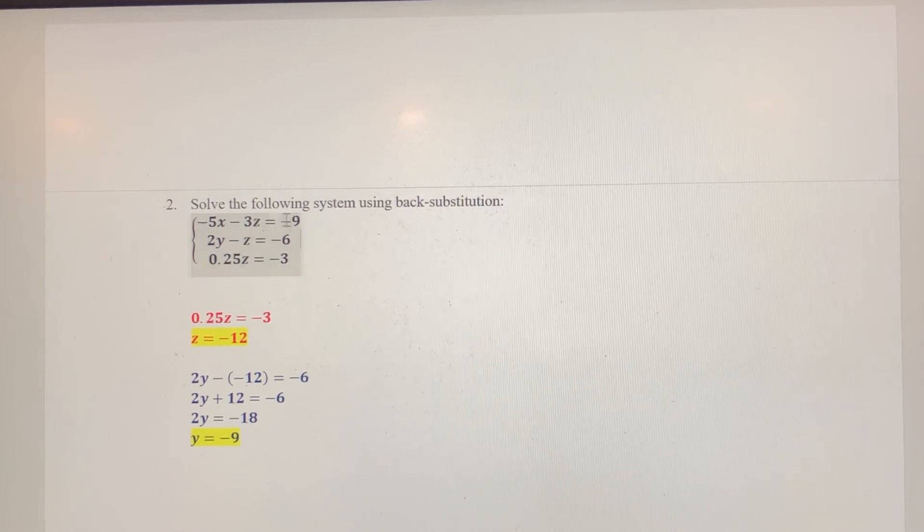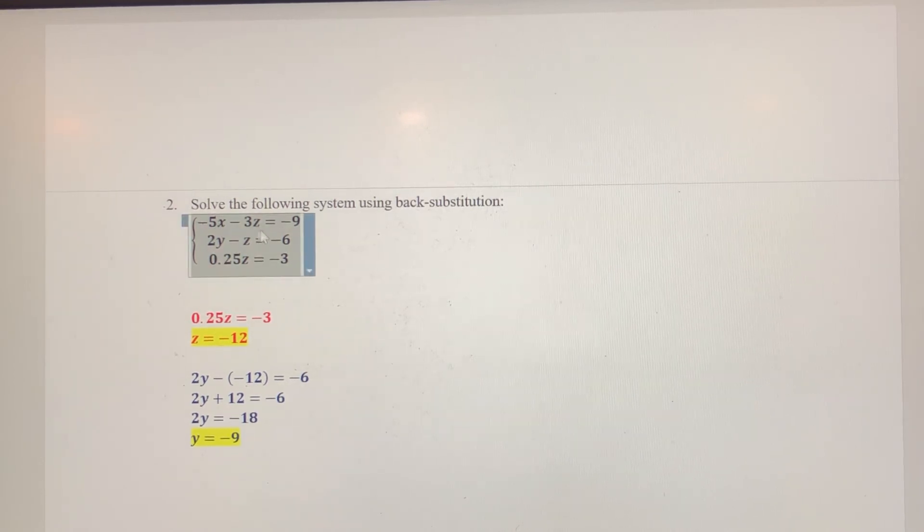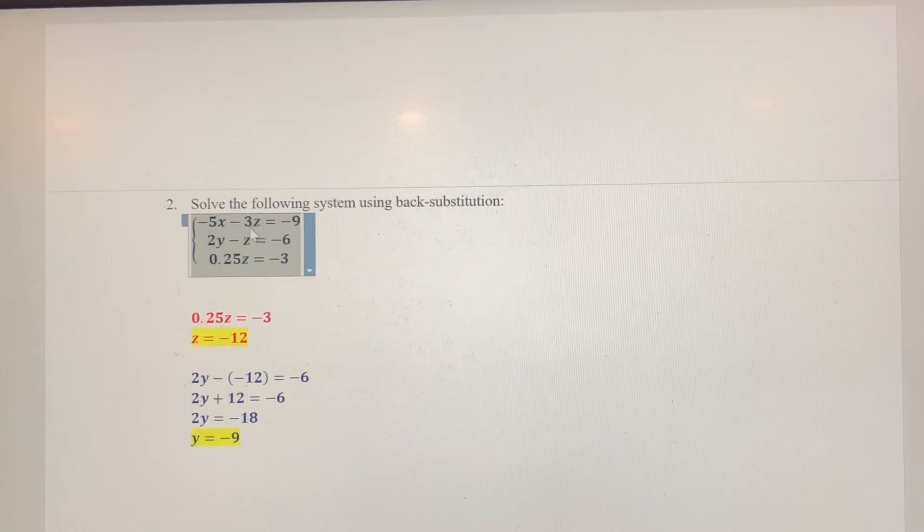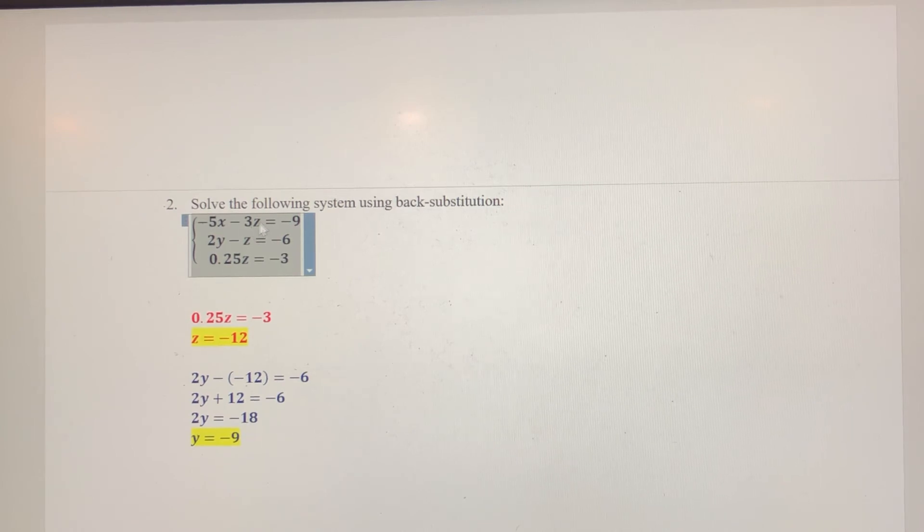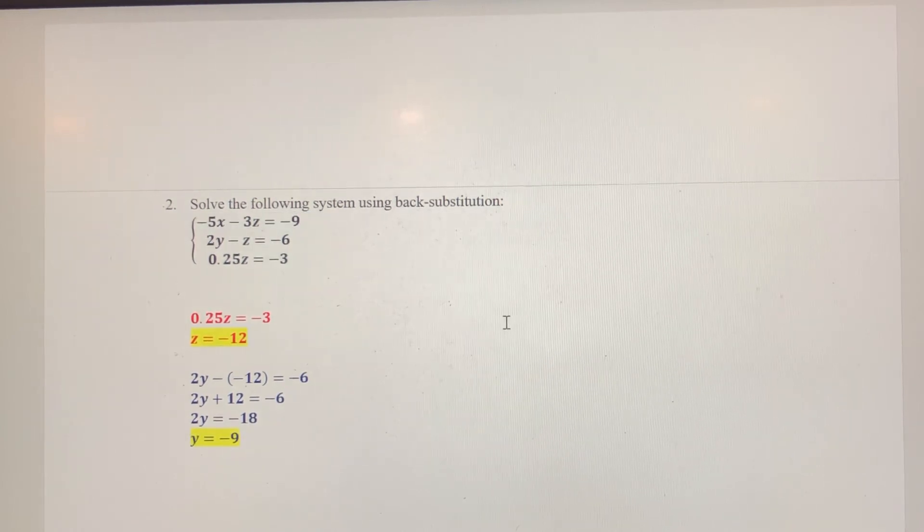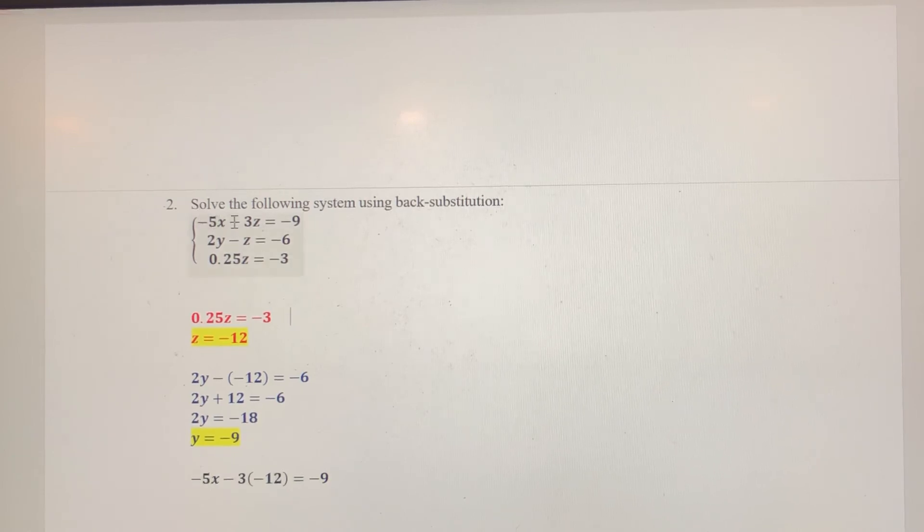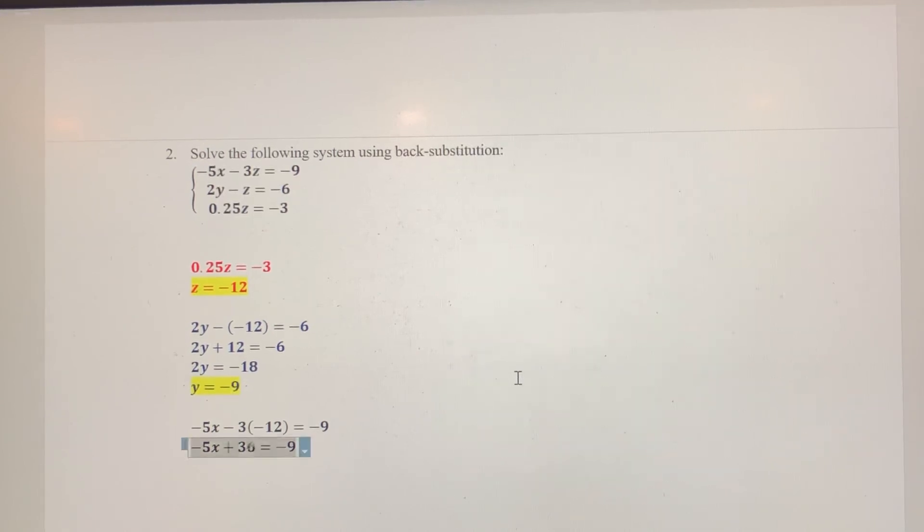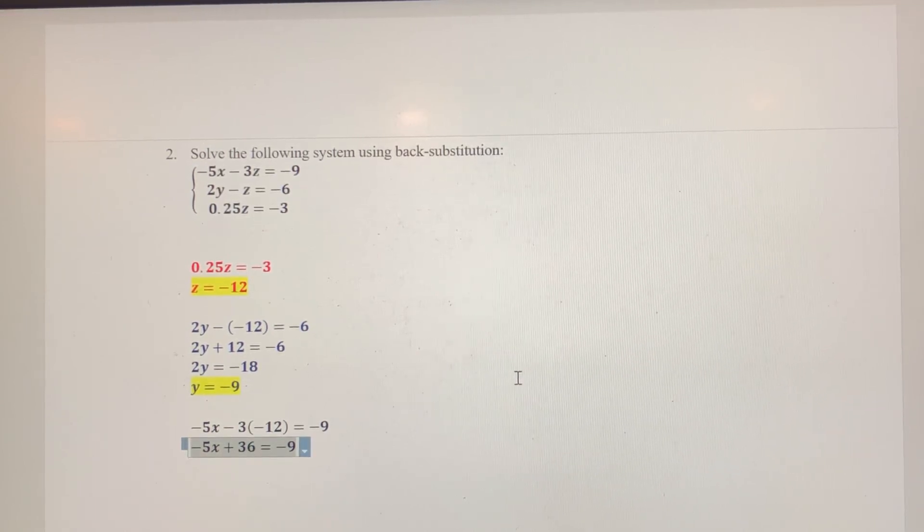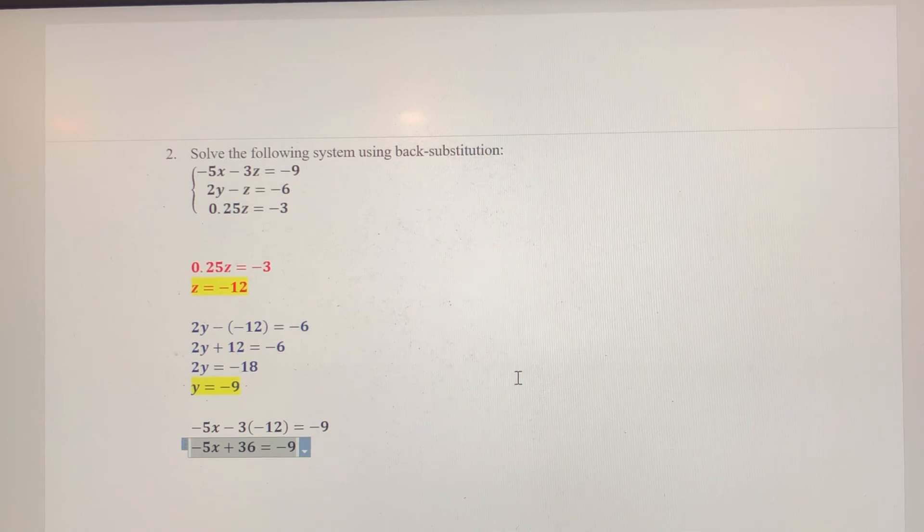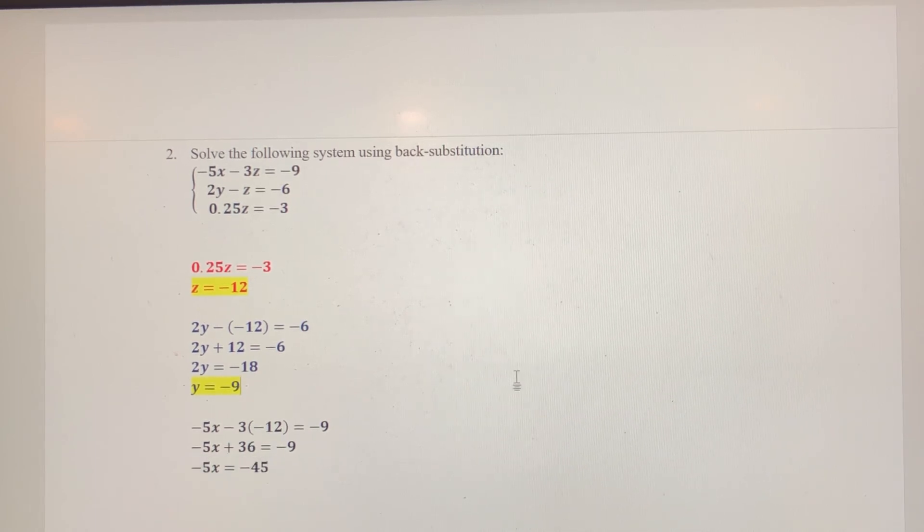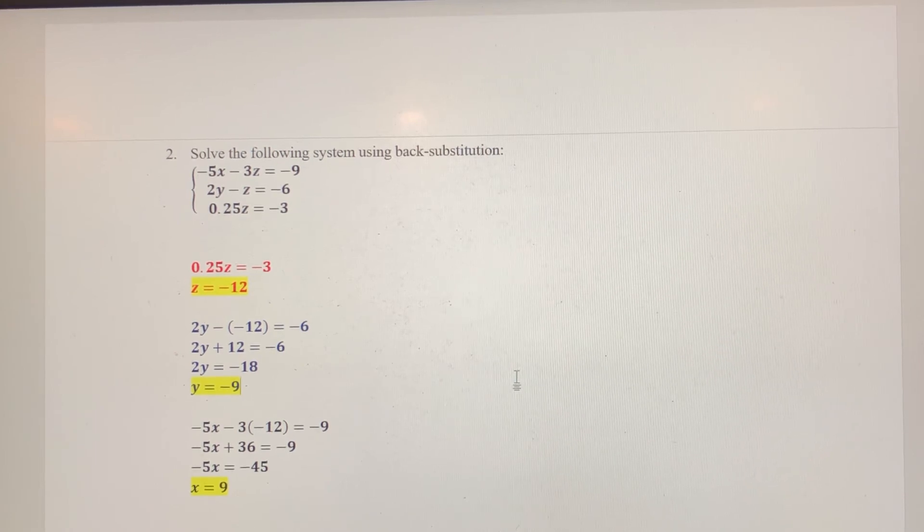Now, looking at this first equation, I don't have a Y. I just solved for Y, but I don't even need it. So, I'm just going to use my value for Z and plug it in right there. So, I've got negative 5X minus 3 times negative 12 equals a negative 9. Simplify. Negative 5X plus 36 equals negative 9. Subtract 36 from both sides and divide by negative 5. So, X equals 9.